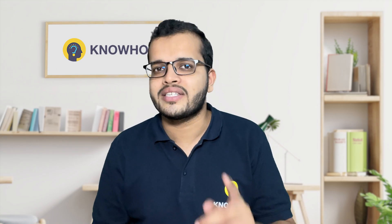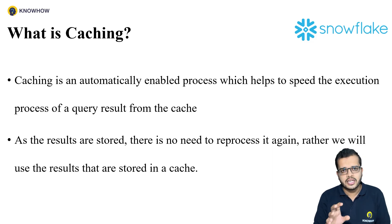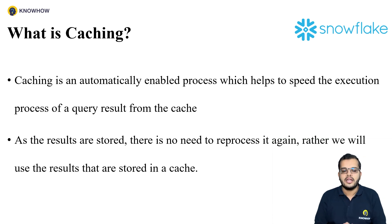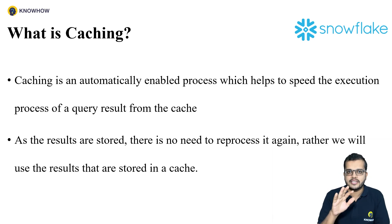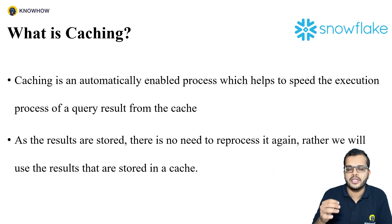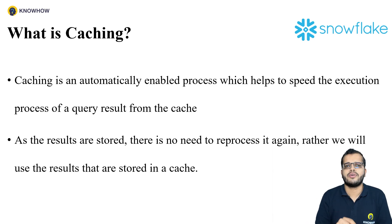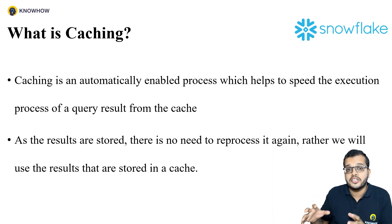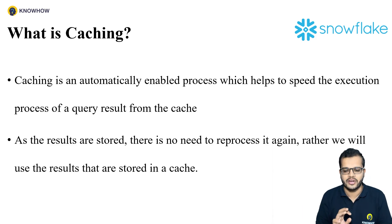Cache is an automatically enabled process which will increase the speed of execution of our queries. What happens is that queries executed in Snowflake are stored — there is no need to reprocess them again. For example, if I am using a warehouse called 'compute warehouse' and I execute a query, then re-execute the same query in the same warehouse, the query will not re-execute. Instead, the result stored in the cache will be shown as the output.